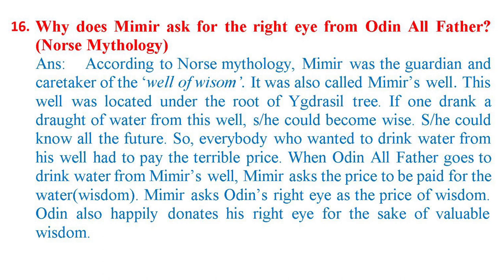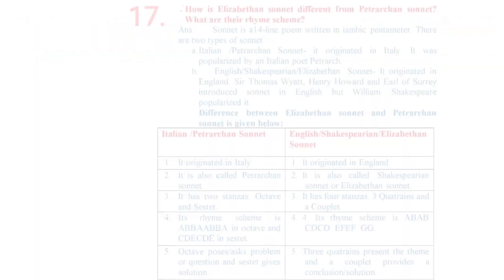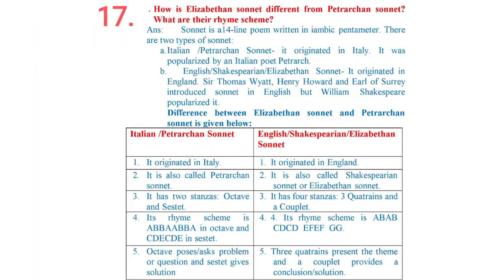When Odin Allfather goes to drink water from Mimir's well, Mimir asks the price to be paid for the water and wisdom. Mimir asks Odin's right eye as the price of wisdom. Odin also happily donates his right eye for the sake of valuable wisdom.